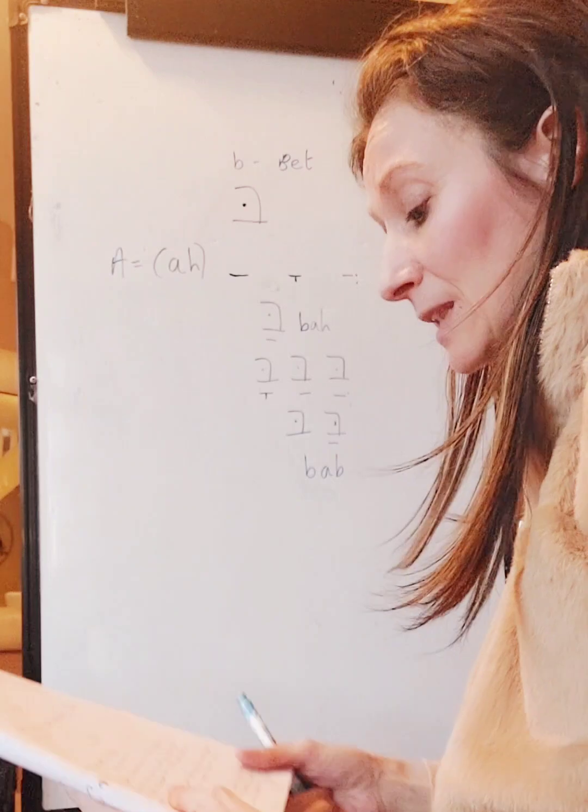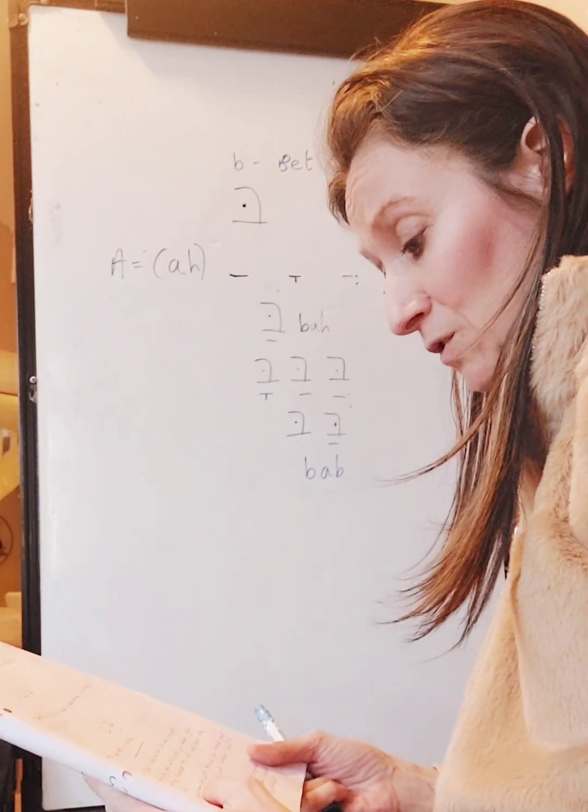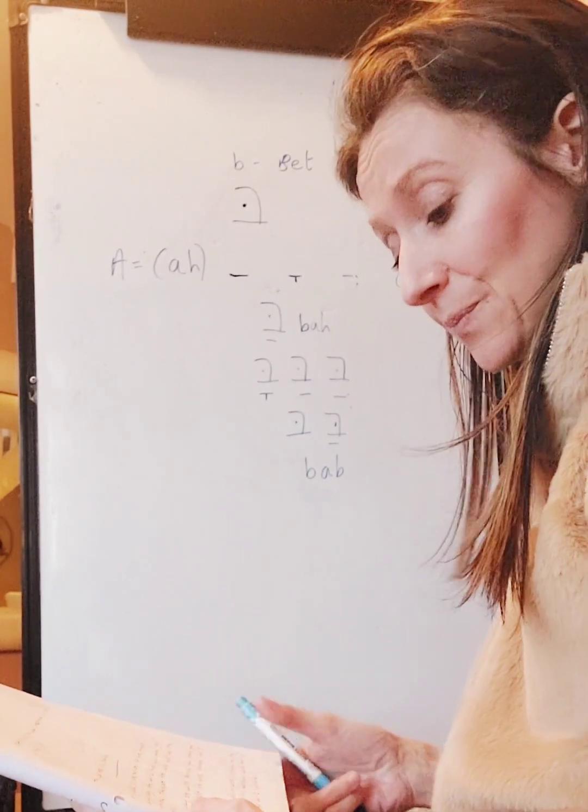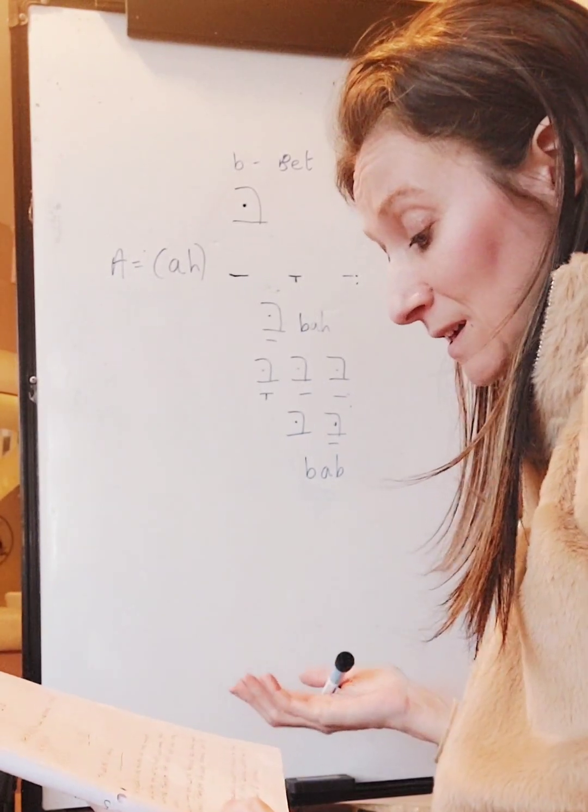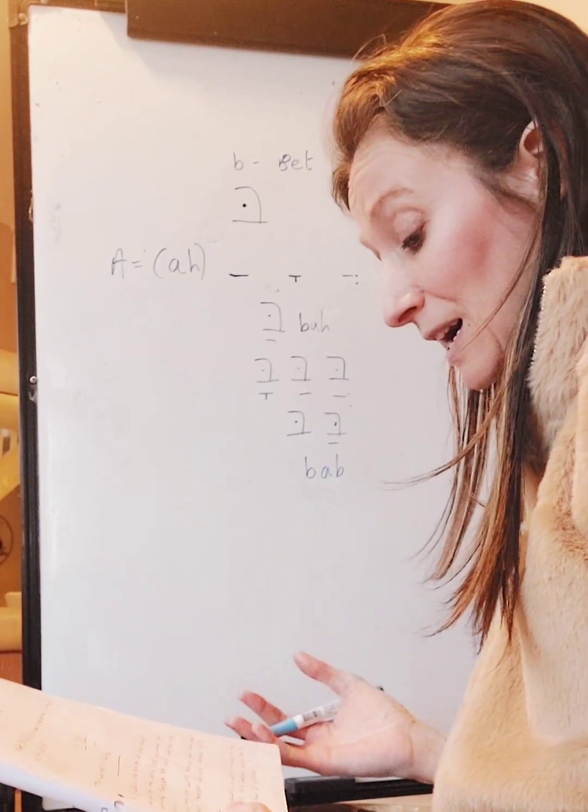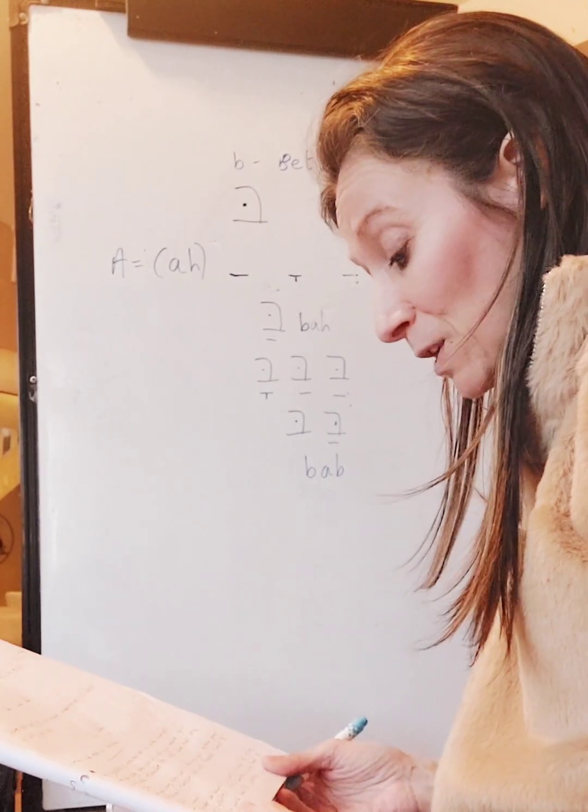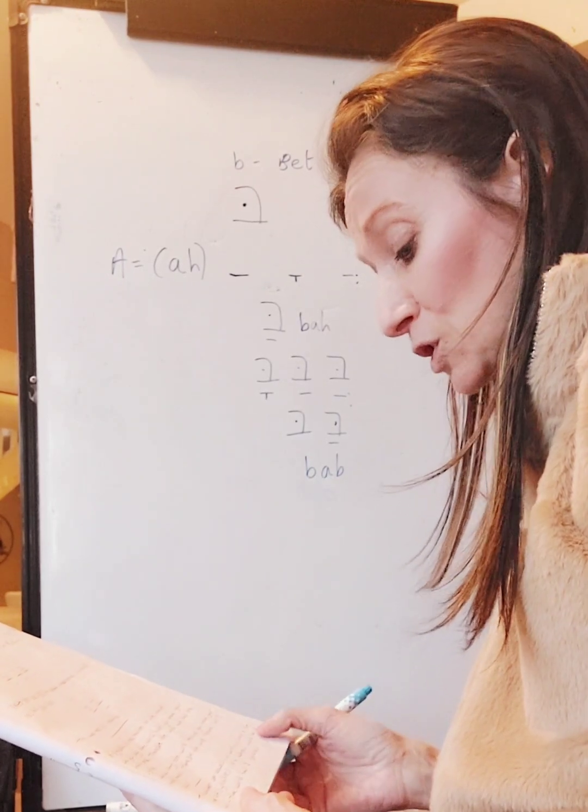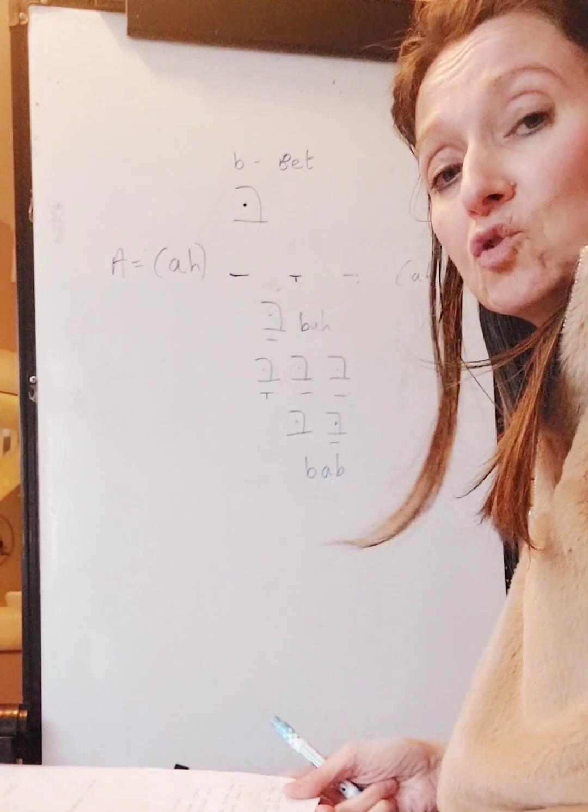Okay, so a syllable is one motion of the mouth. If you say the word hat, you move your mouth once. Therefore, the word hat is one syllable. If you say the word banana, you move your mouth three times. Therefore, the word banana has three syllables. The number of vowels in a word is equal to the number of syllables. If a Hebrew word has two vowels, then the word has two syllables.